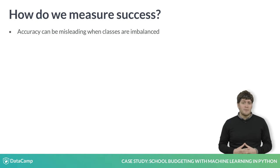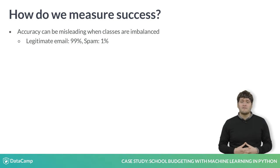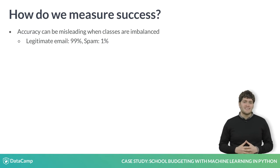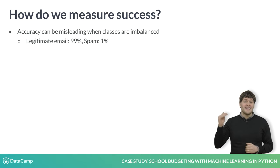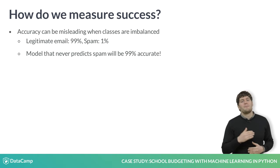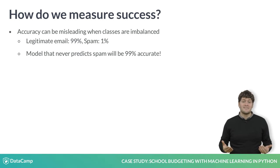Consider the case of identifying spam emails. Let's say that only 1% of the emails I receive are spam, and the other 99% are legitimate emails. I can build a classifier that's 99% accurate just by assuming every message is legitimate and never marking a message as spam. But this model isn't useful at all because every message, even the spam, ends up in my inbox.